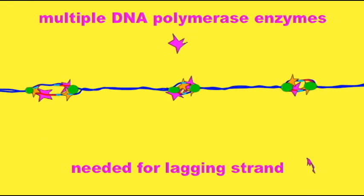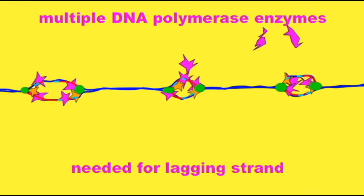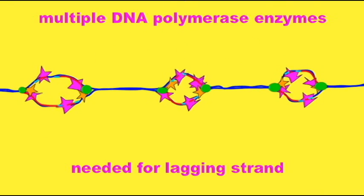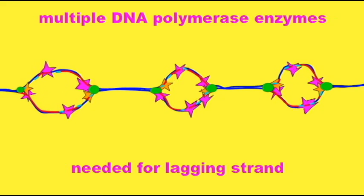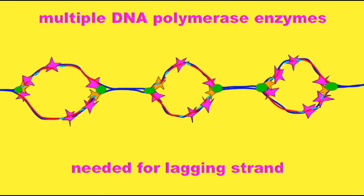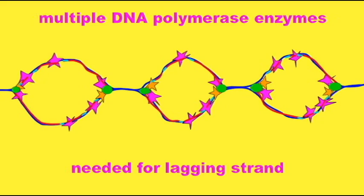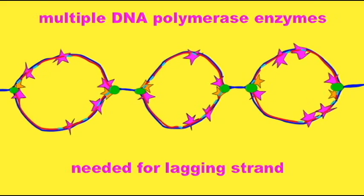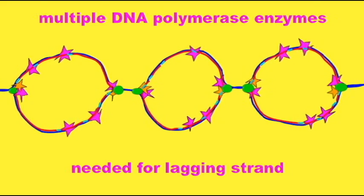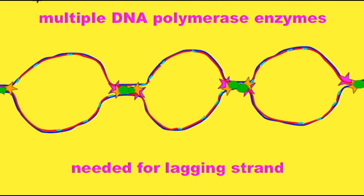So while one strand is being synthesized continuously from a 5' to 3' direction as DNA polymerase follows the replication fork, on the other strand, the opposing strand, the DNA must be synthesized from a series of fragments known as Okazaki fragments, and this is known as the lagging strand.